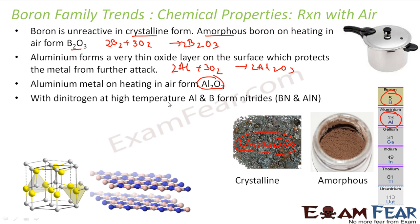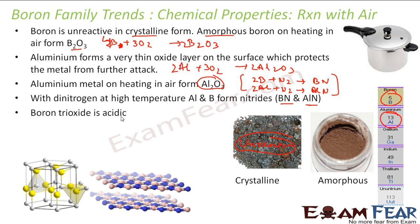With dinitrogen at high temperature, both aluminium and boron react to form nitrides. Boron plus nitrogen gives BN (boron nitride), and aluminium plus nitrogen gives AlN (aluminium nitride). Also note that boron trioxide (B2O3) is acidic in nature. This is the shape of boron nitride and aluminium nitride.